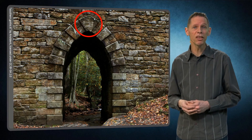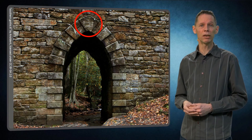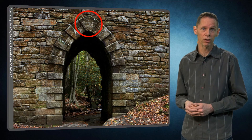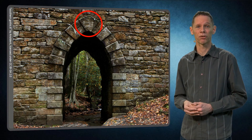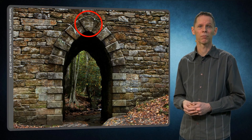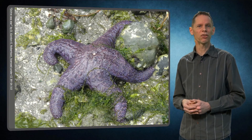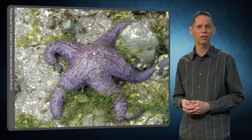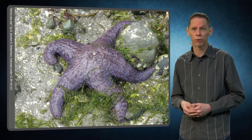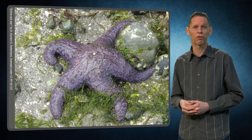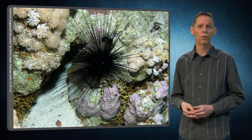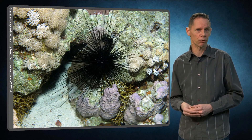Similarly, if keystone species are removed from an ecosystem — due to, for example, a disease or overfishing — the ecosystem collapses and shifts towards a different type of ecosystem. Keystone species can fulfill a crucial role in the food web. They can be small predators or herbivores that prevent fast growing species from overwhelming the system. A good example are sea urchins on coral reefs.